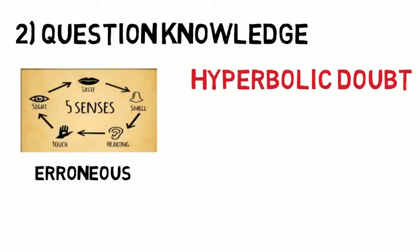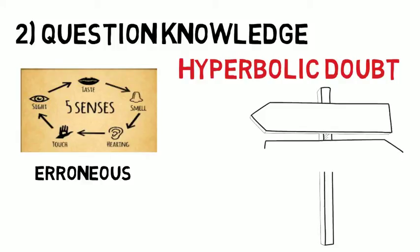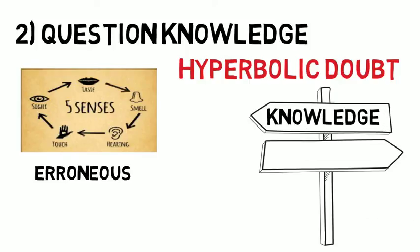So in the first phase of hyperbolic doubt, Descartes says only accept information that is true. In this sequence, we are getting the contrast between knowledge and information.